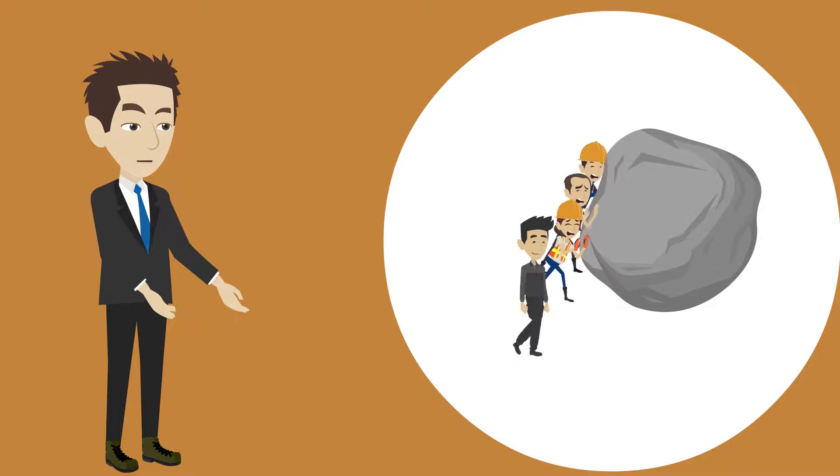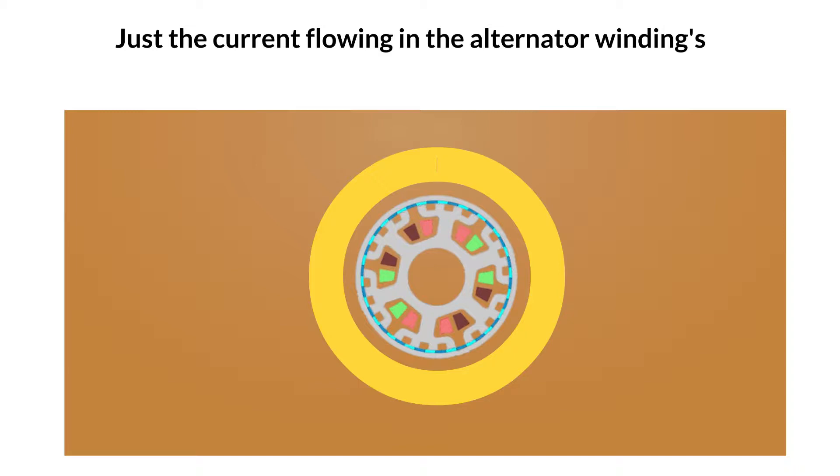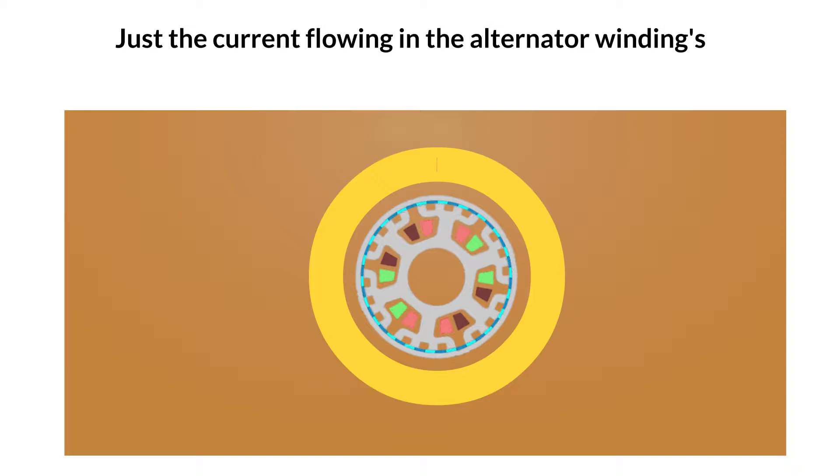Let's add a supervisor walking with them, but not pushing the stones. The supervisor is like KVAR. It's current flowing, but not doing real work. So it doesn't have an effect on the engine, just the current flowing in the alternator windings.